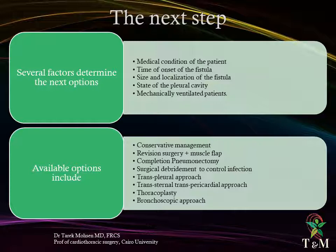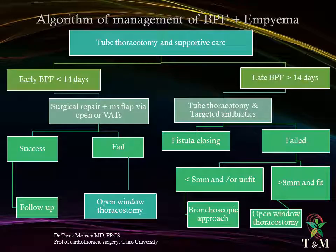The next step in management is guided by several factors: assessment of the patient's medical condition, time of onset of the fistula, size and localization of the fistula, the state of the pleural cavity, and whether the patient is mechanically ventilated. Available options include conservative management, revision surgery with muscle flaps, completion pneumonectomy, surgical debridement, transpleural or transternal transpericardial approach, thoracoplasty, and fiber optic bronchoscopic approach.